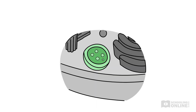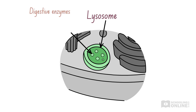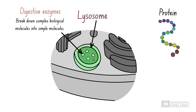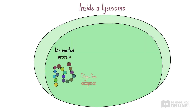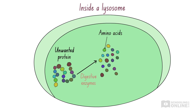The Golgi apparatus also generates vesicles that form lysosomes. A lysosome is an organelle that contains digestive enzymes. Remember, enzymes are biological catalysts that speed up chemical reactions. In lysosomes, enzymes speed up the breakdown of complex biological molecules, like proteins and lipids, into simple molecules. These simple molecules can be used as building blocks for new, complex molecules and organelles. For example, a lysosome can digest an unwanted protein into its basic units, amino acids, which can then be used to construct new, useful proteins.